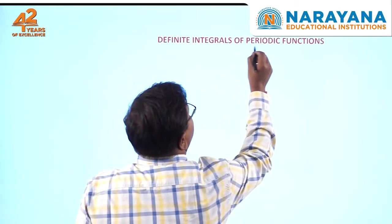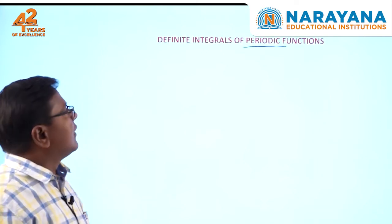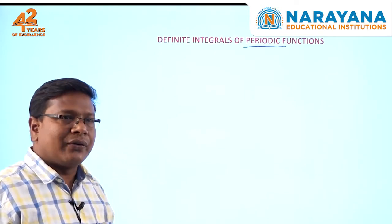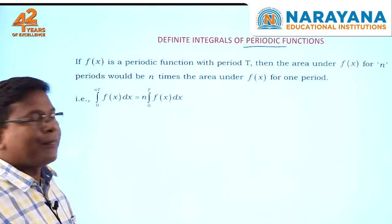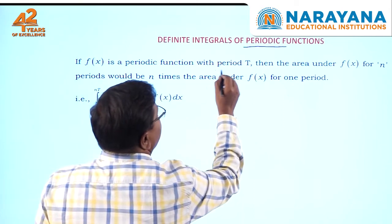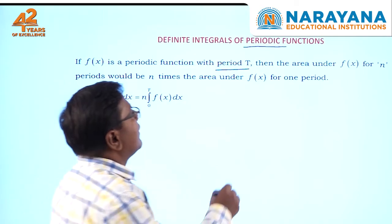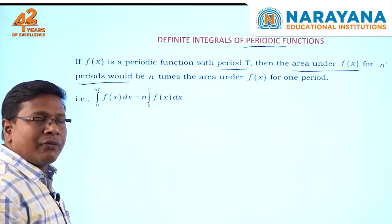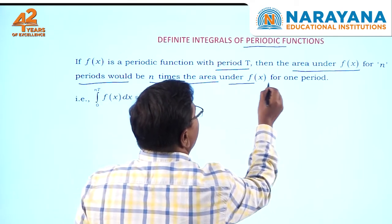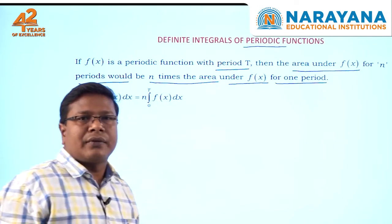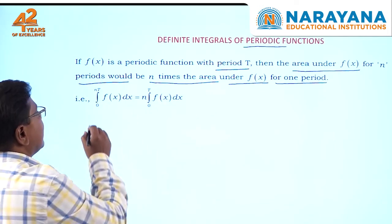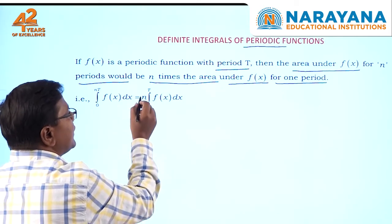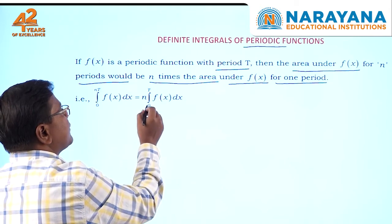Today's topic is definite integrals of periodic functions. If f of x is a periodic function with period t, then the area under f of x for n periods is n times the area under f of x for one period. That is, integration of f of x from 0 to n·t is equal to n times integration of f of x from 0 to t.